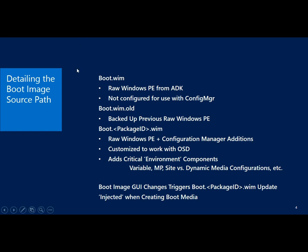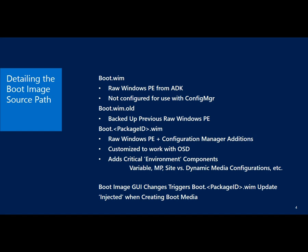So with that said, let's actually look at the boot image source directory — an example boot image source directory. Detailed here on the screen, there are actually three files. There's boot.wim, which is the raw Windows PE directly from the ADK — it is not customized for Config Manager. Then we have boot.wim.old, which is the previous version of Windows PE kept as a backup. And finally, you'll see boot.packageid.wim, which is the version of Windows PE that we use during imaging.